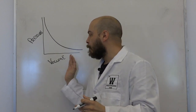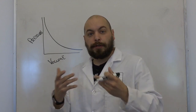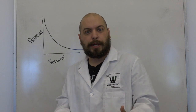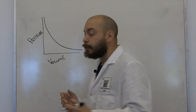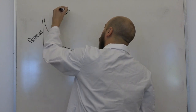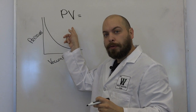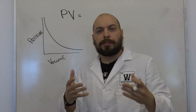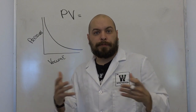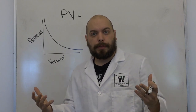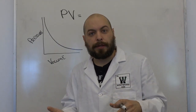An inverse relationship means if you've cut the volume in half, you've doubled the pressure. If you've cut the volume by 10, you've increased the pressure by a factor of 10. Mathematically speaking, pressure times volume multiplied together gives you a constant value. So if you double the pressure, you have to cut the volume in half for them to equal the same thing.